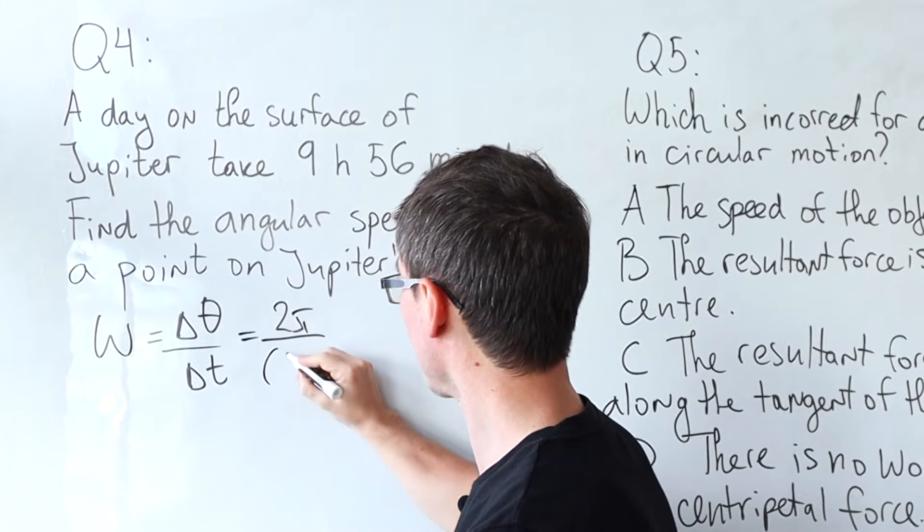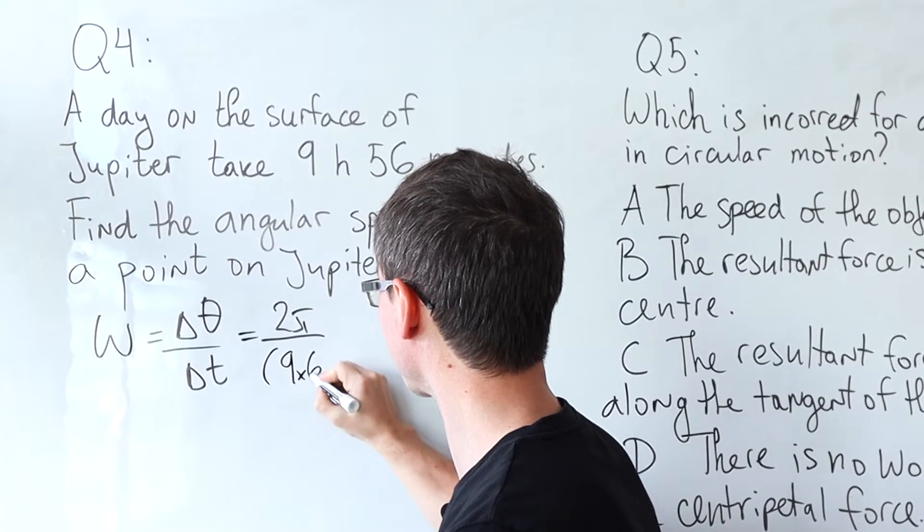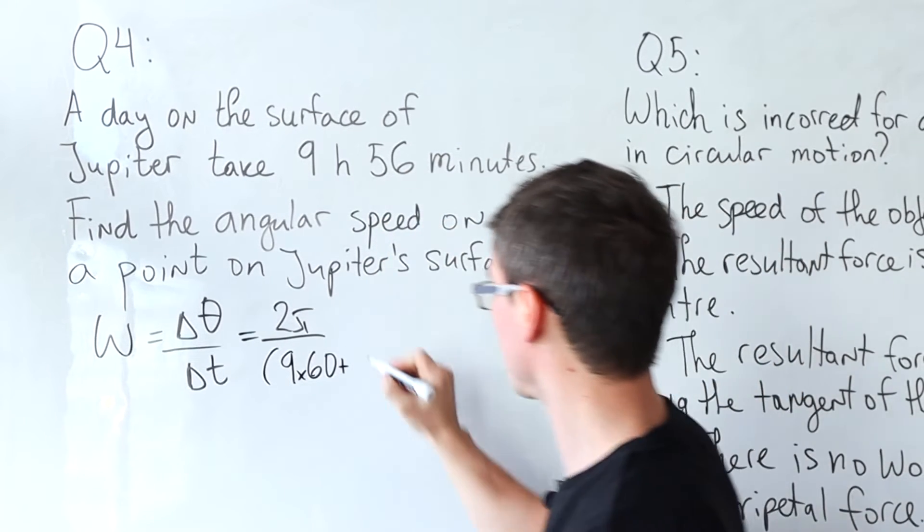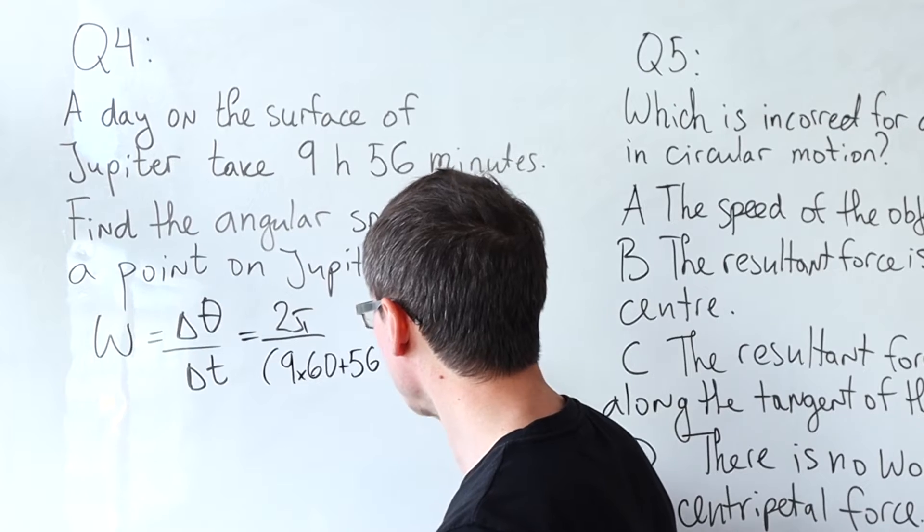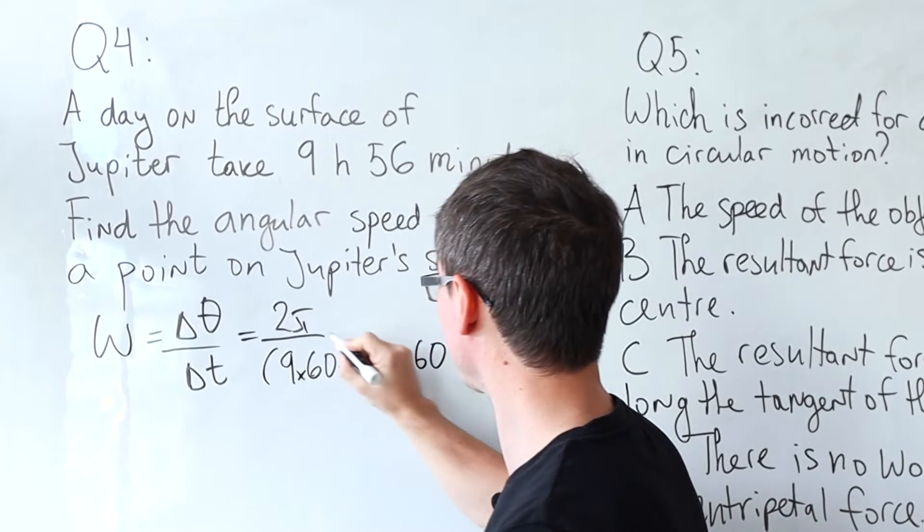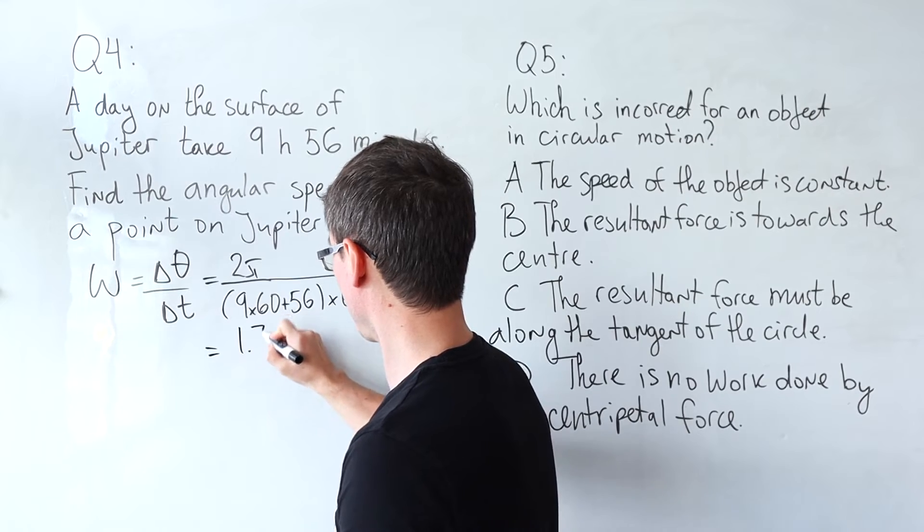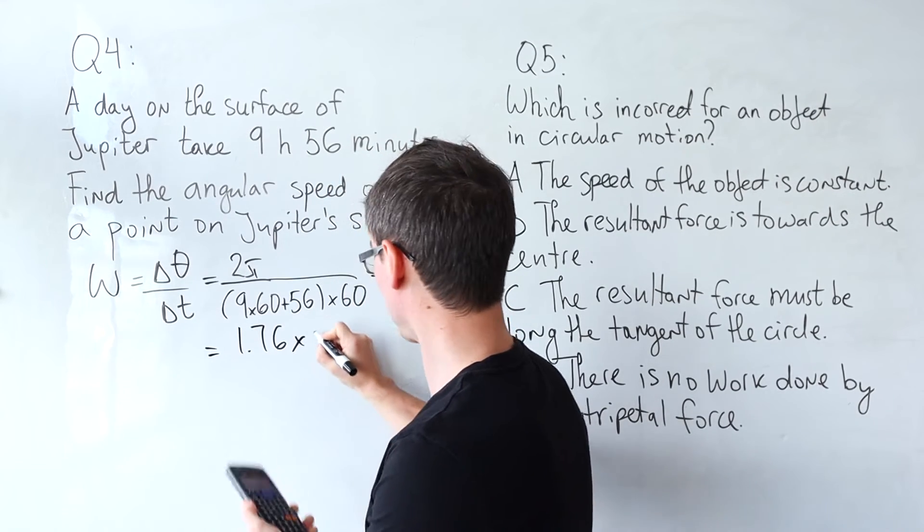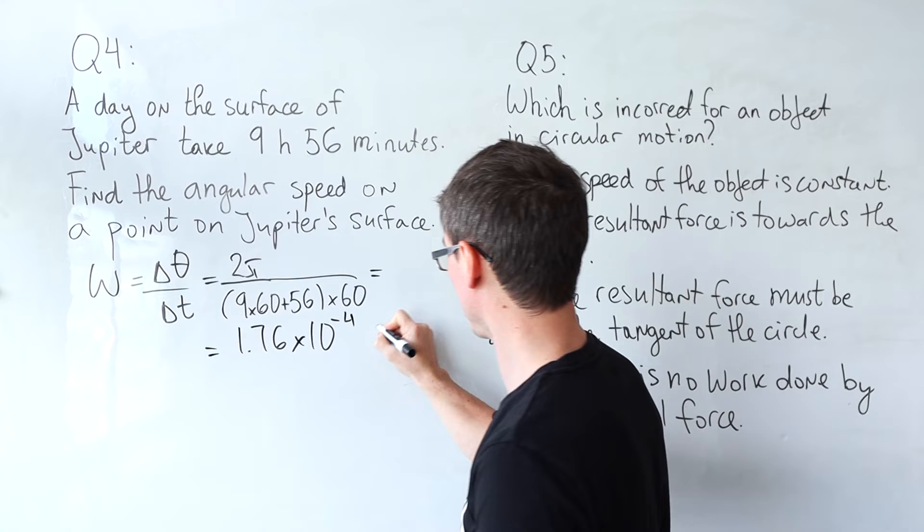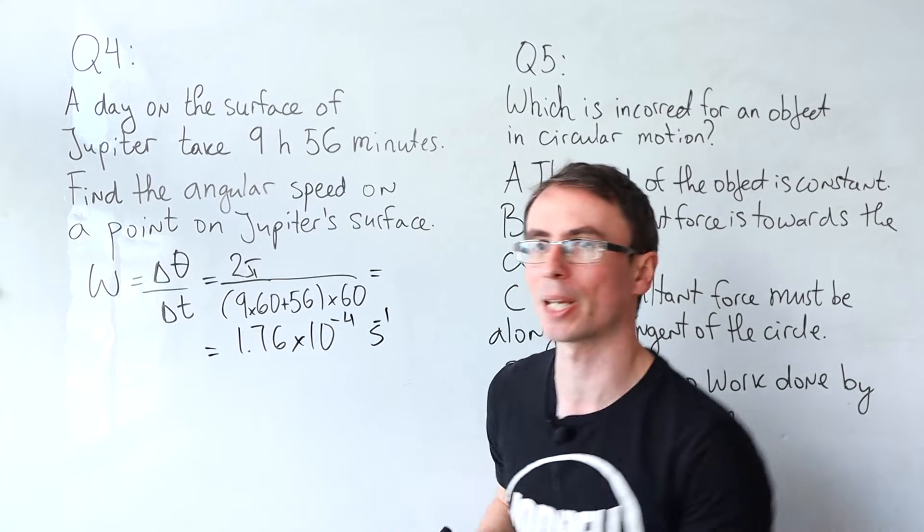This will be 9 times 60 plus an additional 56 minutes and then each of them are going to have 60 seconds. This gives me 1.76 times 10 to the power of minus 4 radians per second which we tend to write as s to the power of minus 1.